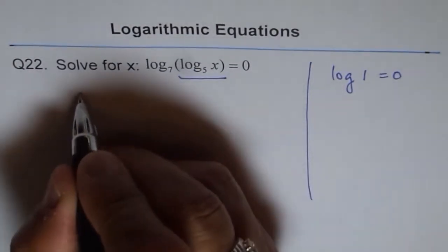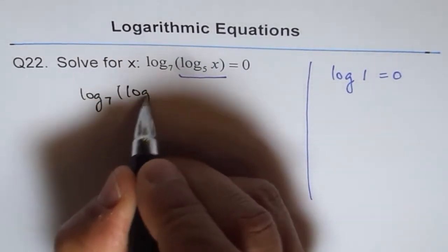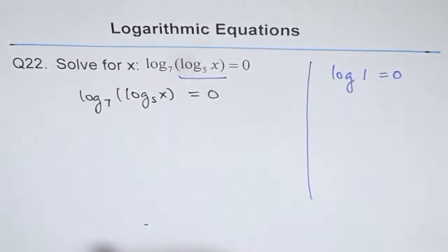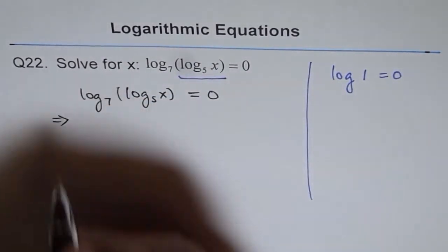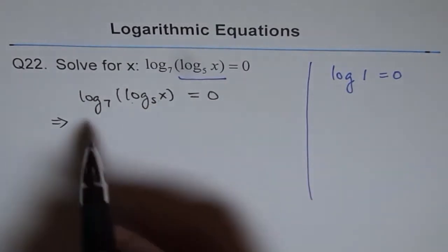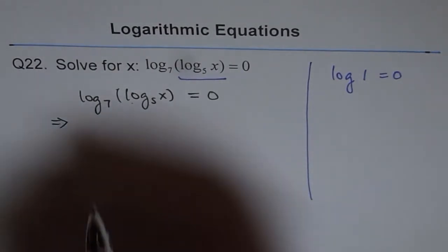So we say, log base 7 of log base 5 of x equals 0. Since log of 1 to any base is 0, this means the argument must equal 1.